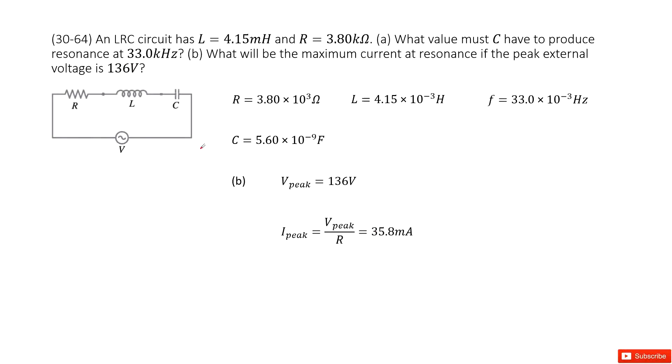So this one, the peak voltage is given, asking you to find the peak current. So in this case, at the peak, we can see the peak current as peak voltage divided by the resistance R. So we get the answer there.